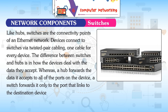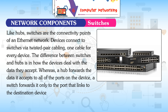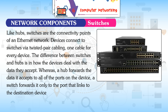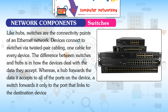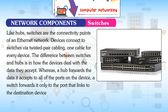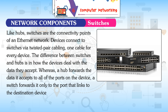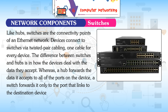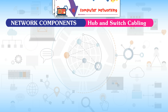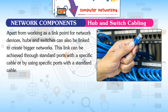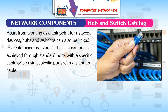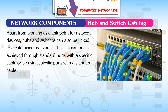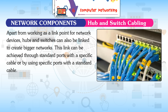Switches: Like hubs, switches are the connectivity points of an Ethernet network. Devices connect to switches via twisted pair cabling, one cable per device. The key difference is that whereas a hub forwards data to all ports, a switch forwards data only to the port that links to the destination device. Hubs and switches can also be linked together to create bigger networks through standard ports with a specific cable or specific ports with a standard cable.